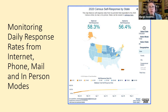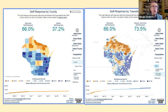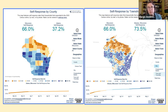The township breakdown of Wisconsin shows the dark blue areas — up into 75% or above — in the southern part of the state, while the northern part is very low. Milwaukee is missing from the township map because it's not a township, so you have to go to a different map to get the city data.